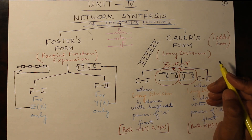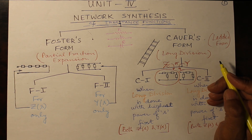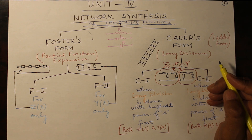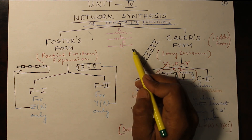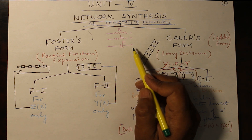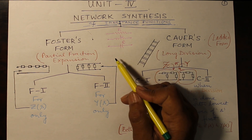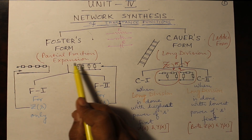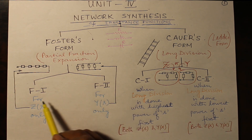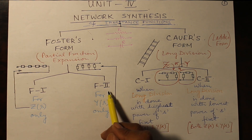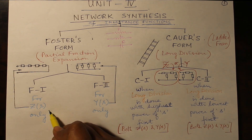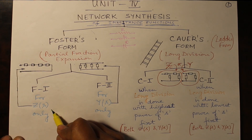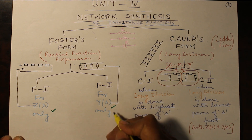We are starting Unit 4: Network Synthesis of Emittance Functions. An emittance function is basically impedance and admittance functions combined together. We are going to use RLC three components and synthesize a given network function into Foster's form and Cauer's form. Foster's form is also known as partial fraction expansion form, with F1 and F2. F1 is done for impedance functions and F2 for admittance functions.